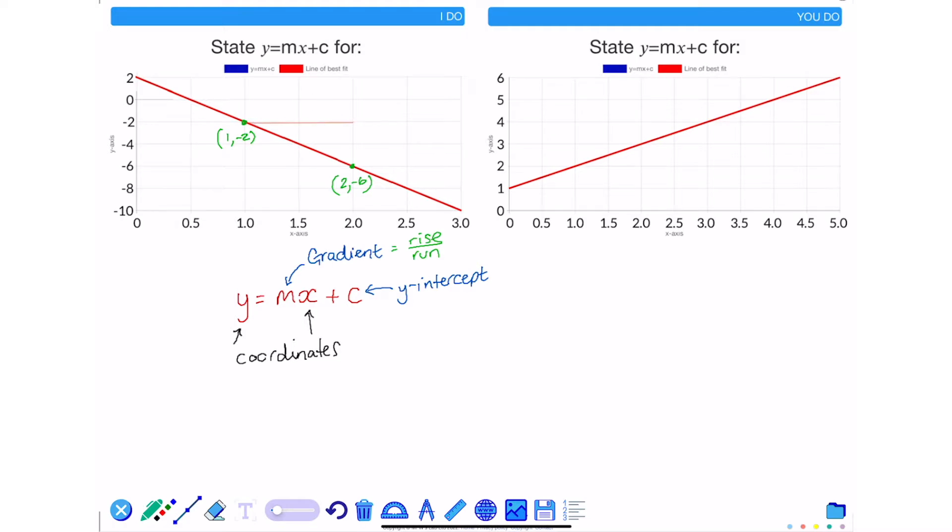Drawing a little triangle between these two points allows me to see that I'm going across 1 and down 4. Negative 4 is my rise.